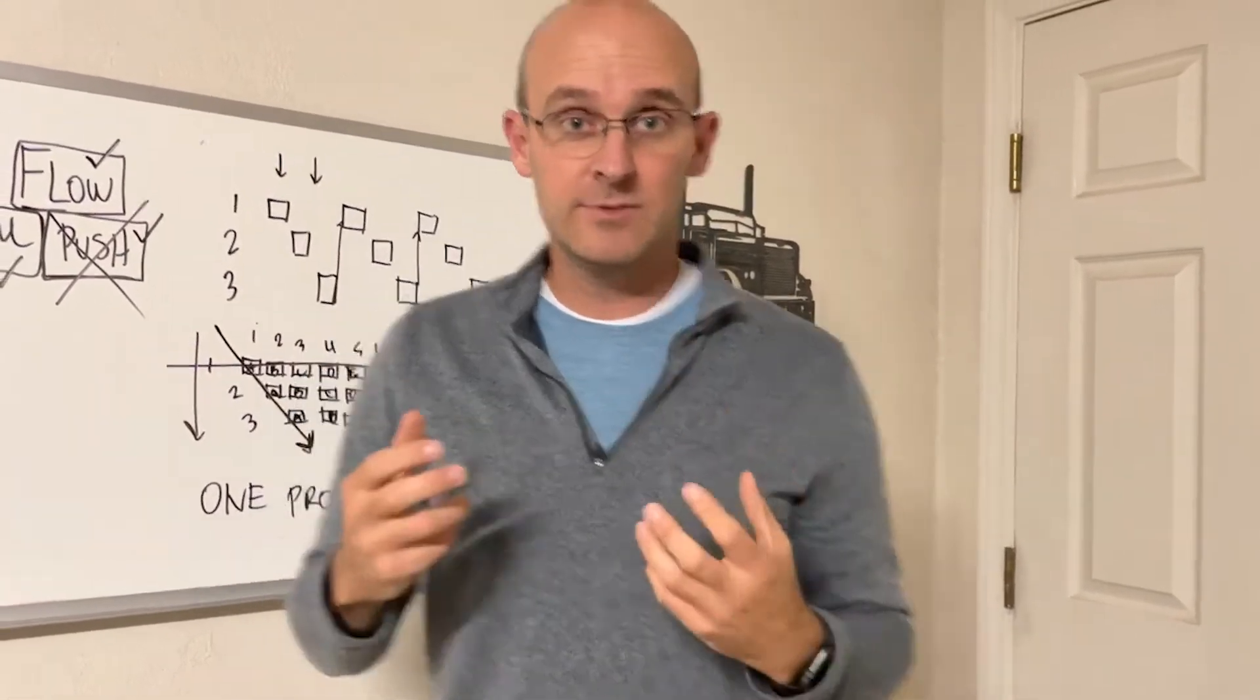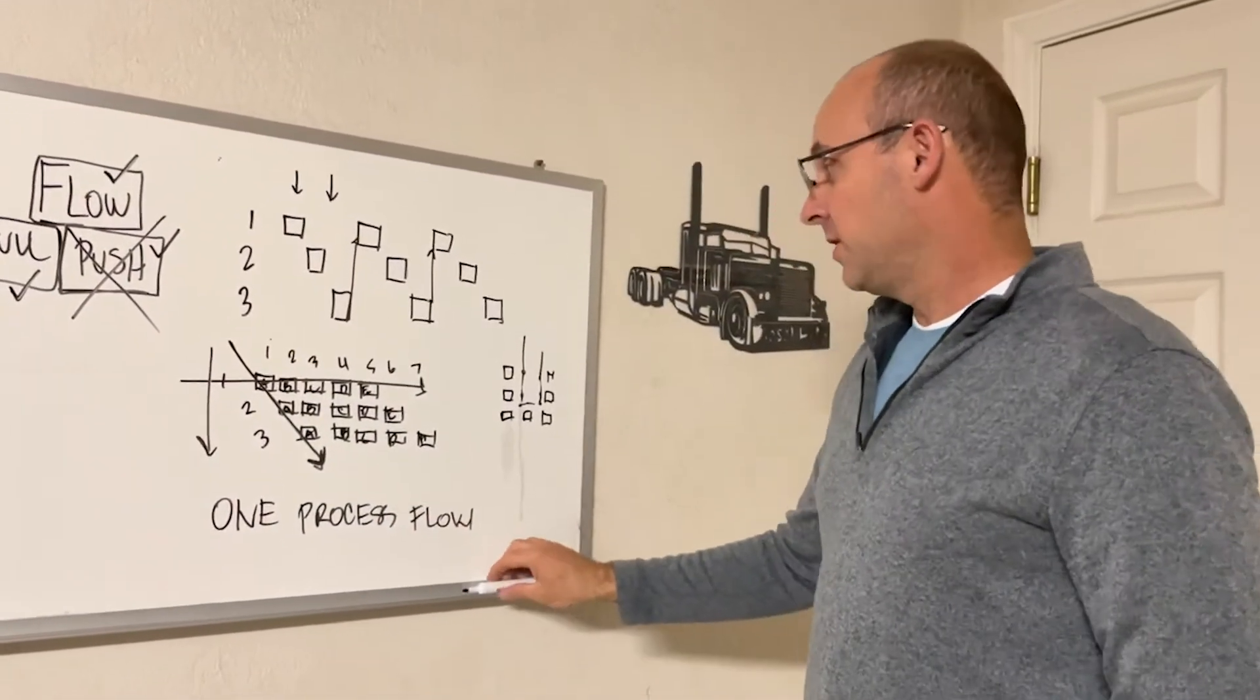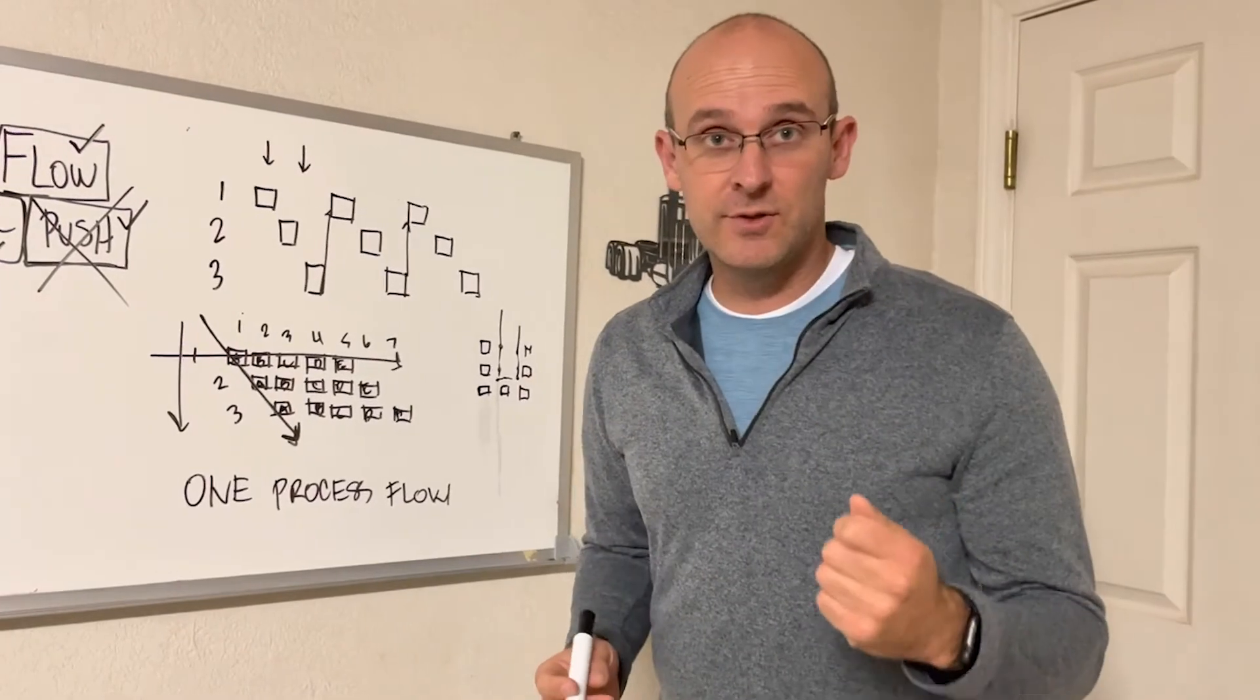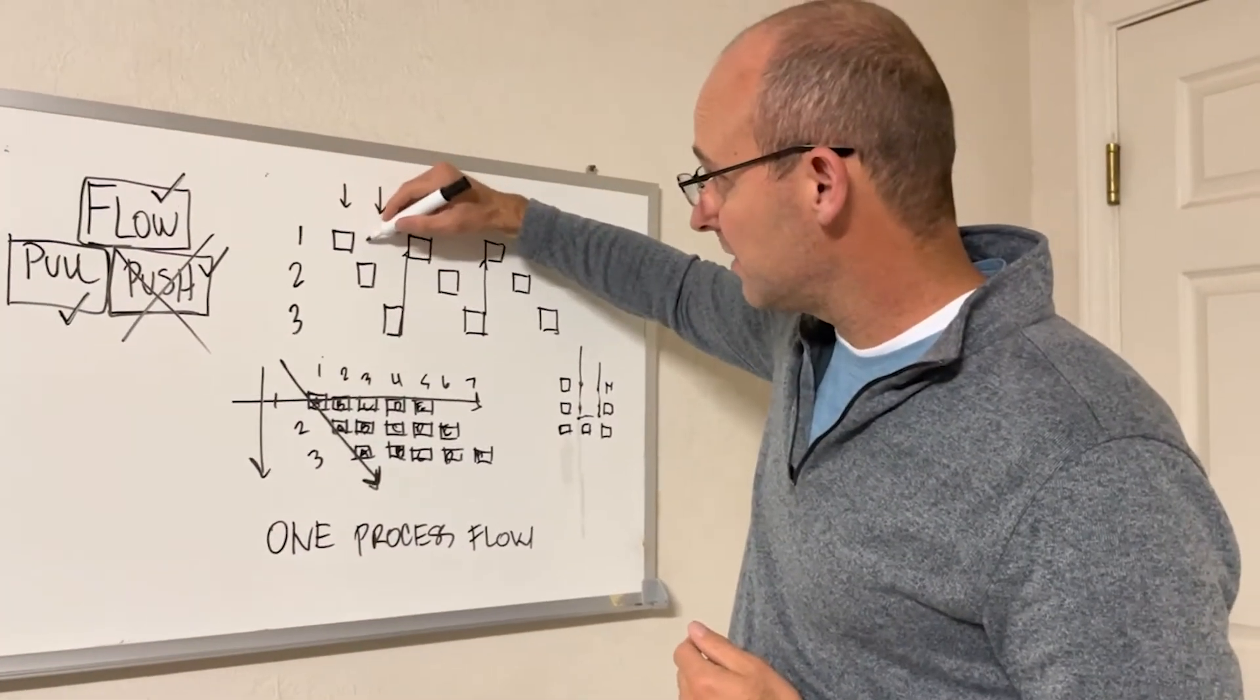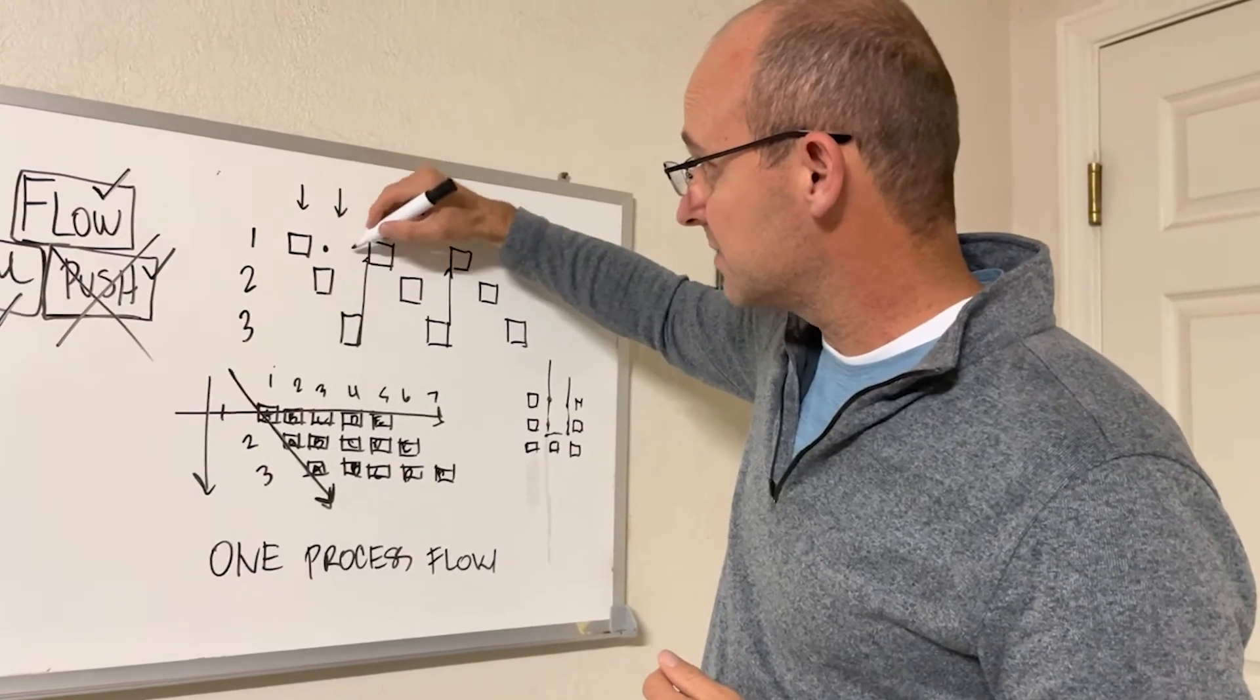So it's not one-piece flow, it's one process flow. So what I want to give us: two things that we can learn from this. When you see blank spaces here, so that's a blank spot, blank spot.